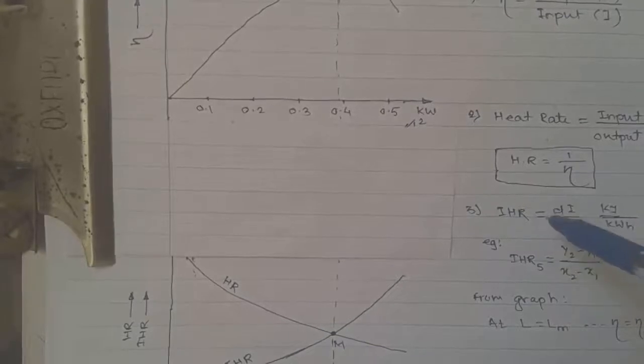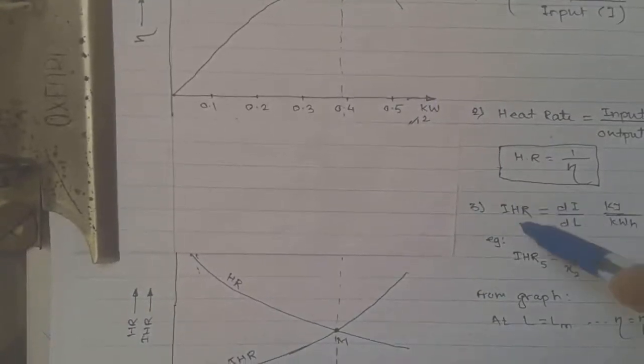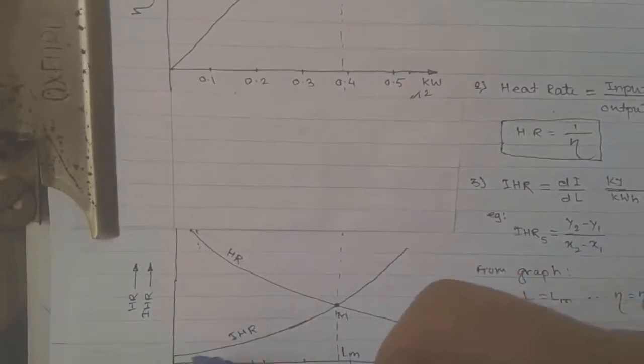The third term is IHR — incremental heat rate — which is the ratio of change in input to the change in output, or the increase in input to the increase in output. The unit of IHR is also kilojoules per kilowatt-hour. IHR can be calculated from the graph plotted for heat rate.